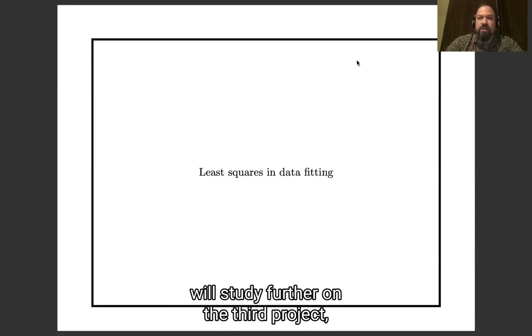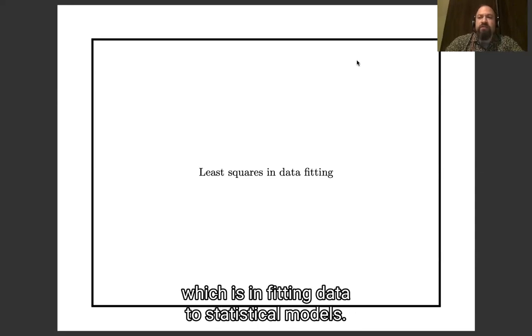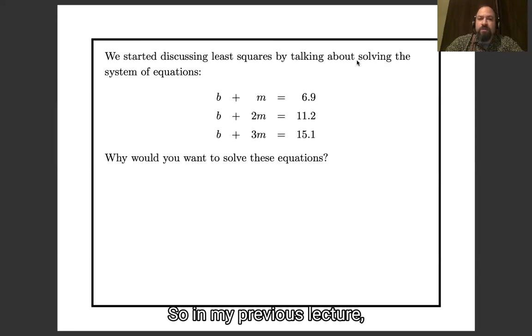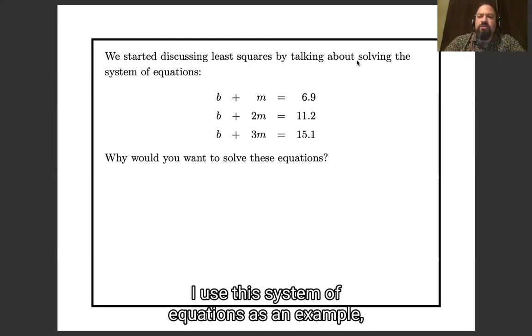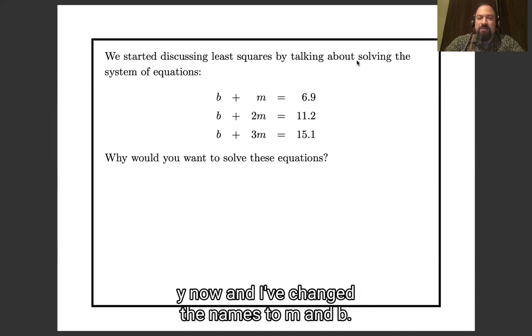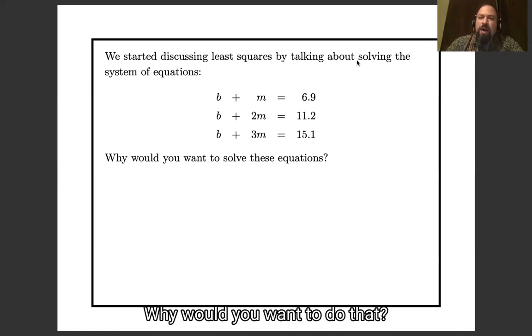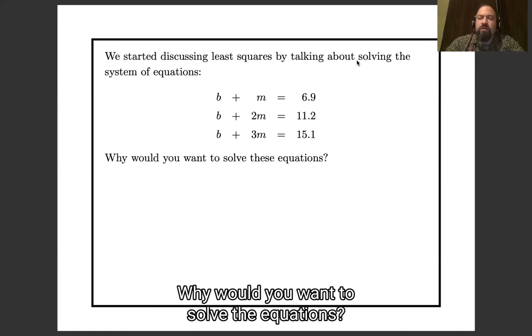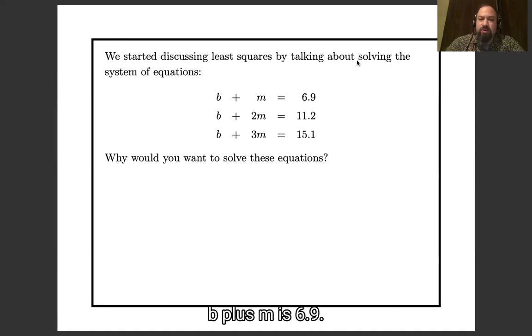And I want to talk about one situation where that comes up a lot, which you'll study further on the third project, which is fitting data to statistical models. So in my previous lecture I used this system of equations as an example except the variables were called x and y, and I've changed their names to m and b. Why would you want to do that? Why would you want to solve the equations b plus m is 6.9, b plus 2m is 11.2, and so forth?